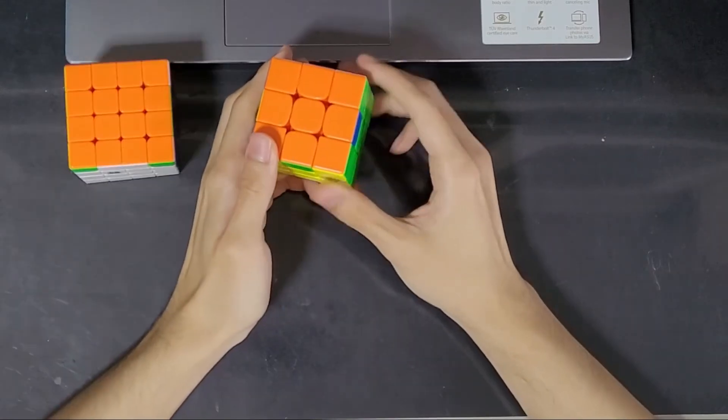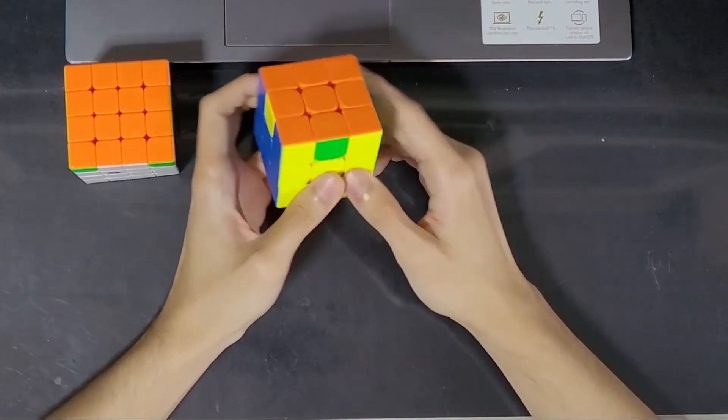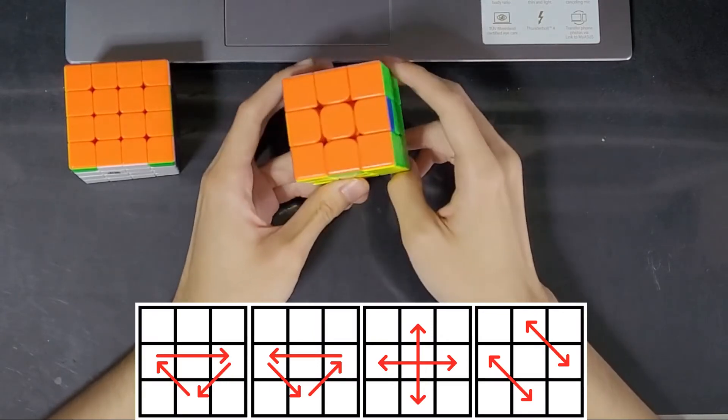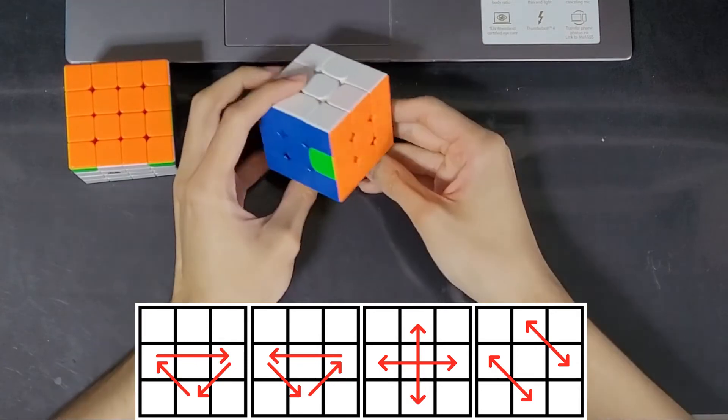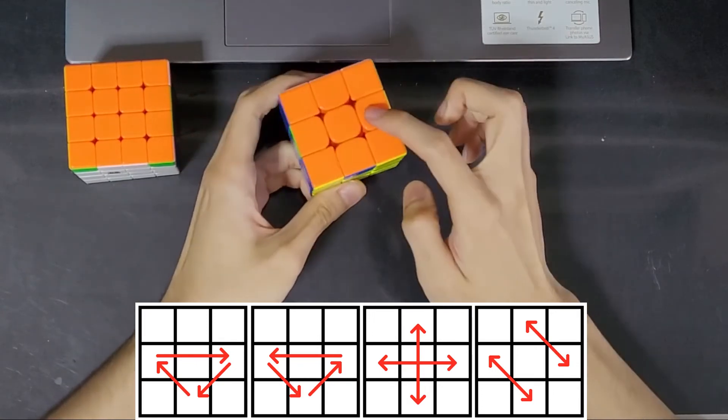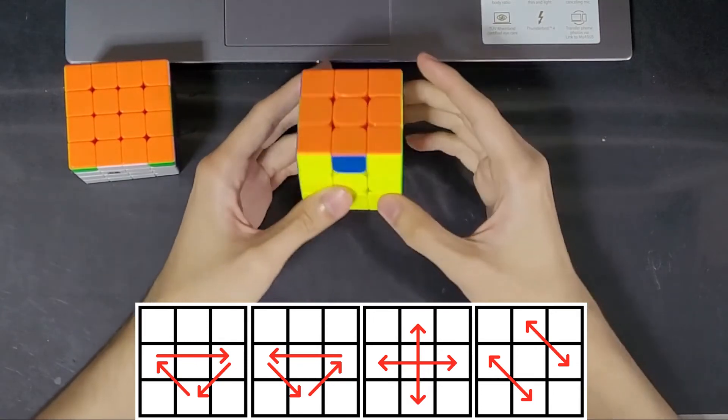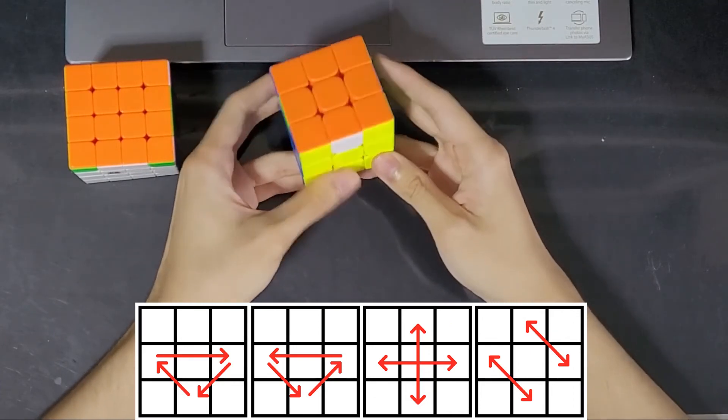So if you have followed this particular 3x3 beginner method, you have realized that only four cases are possible when you reach the last step. One of them looks like this. One would look something like that, which is very similar to the first case, but you basically have three edges that are cycled. And then the remaining two cases involve one where every edge is the opposite color, and another one where all four are wrong, but you have two pairs that are switched with each other.